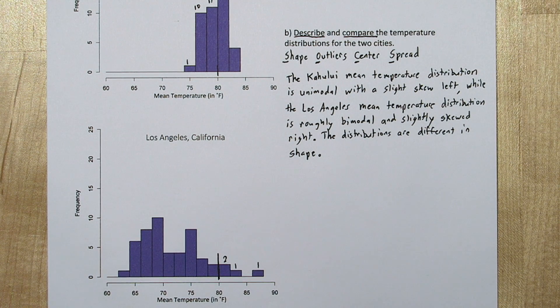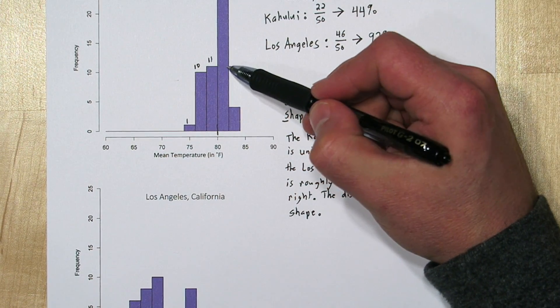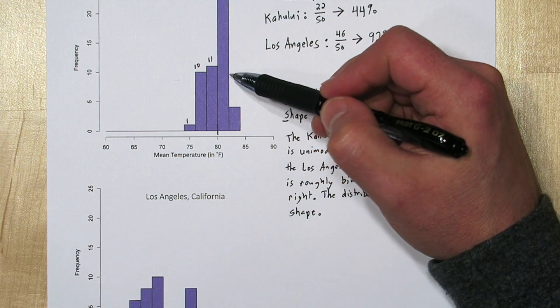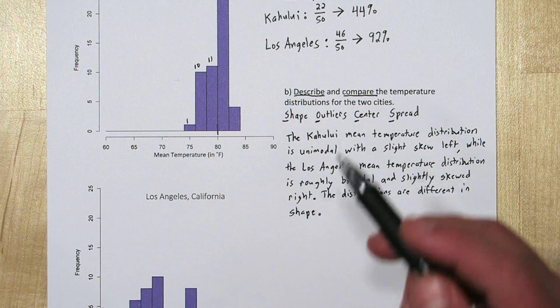The median is what divides the lower and upper halves of the distribution. Since each of these represent 50 days, if we can figure out where the 25th and 26th day are, we could figure out where the median is. In the Kahului data, we're at 22 by the time we get to here, so the 25th and 26th observation are in here. So the median is somewhere between 80 and 82 degrees for Kahului.